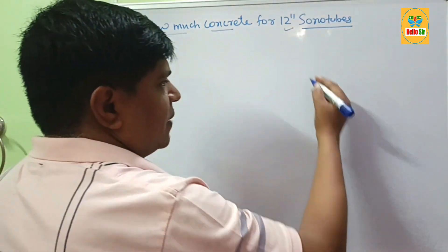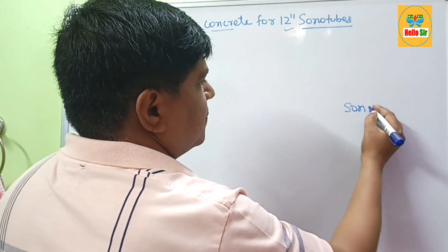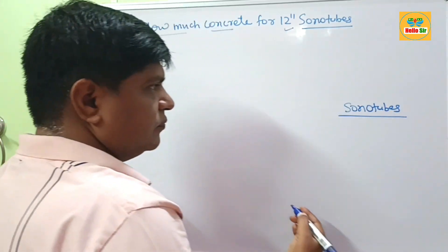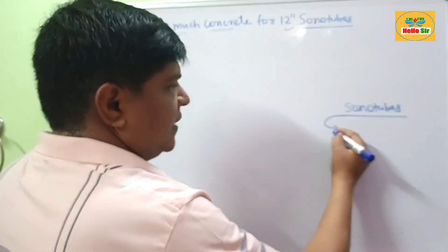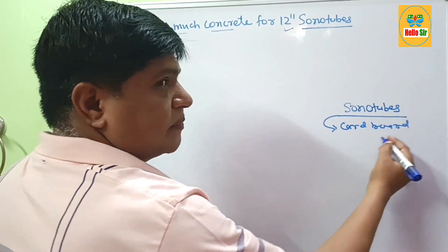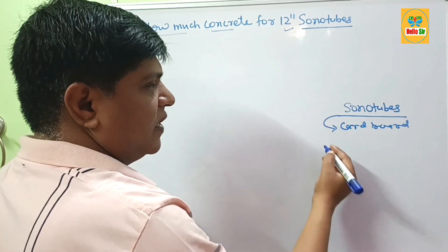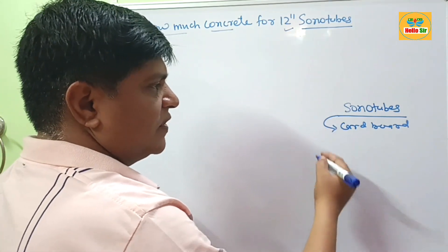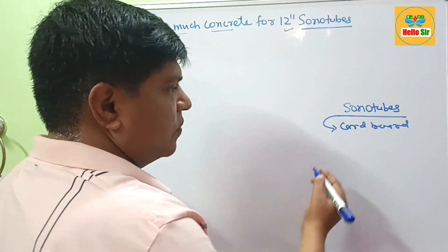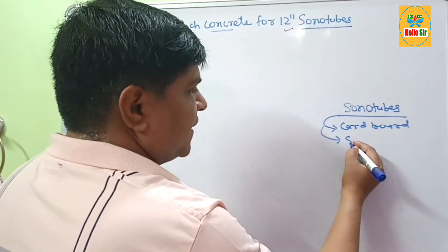You are familiar with sonotubes. First we will describe what sonotubes are. It is made of cardboard material. And this biodegradable material is used to pour concrete below the ground or above the ground for casting of solid concrete pillars.